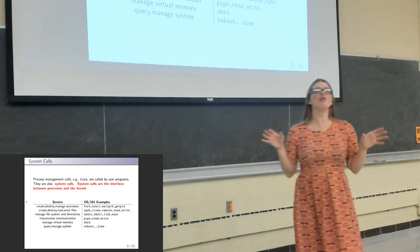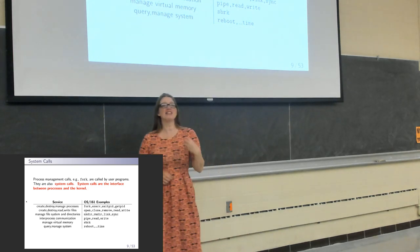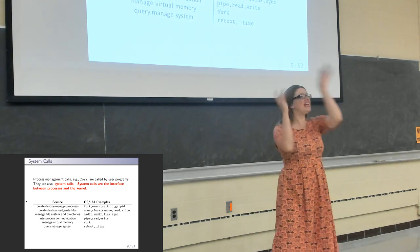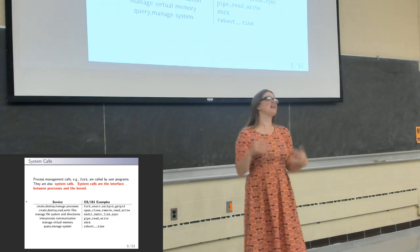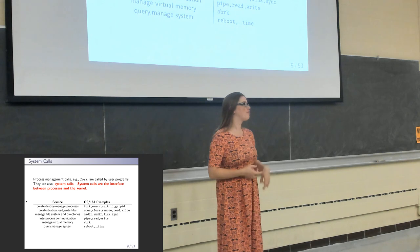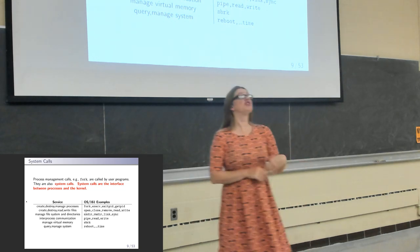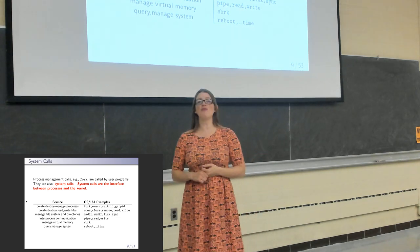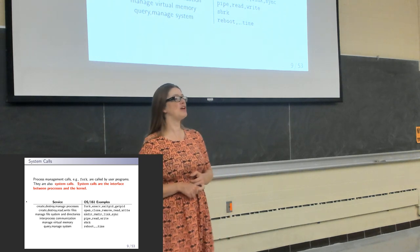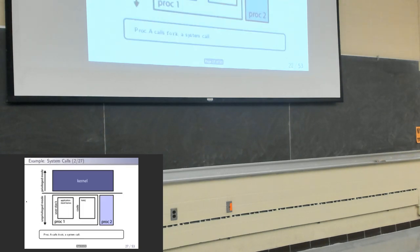We have what's known as a system call library, which provides user programs with nicely named functions, and by some magic is able to get the kernel to do something without actually calling any kernel functions. How we actually get the kernel to do this is by raising an exception. We raise an exception which causes our CPU to flip into privileged mode. All of our threads have two stacks, so when we flip from unprivileged to privileged mode, we switch from our user stack to our kernel stack for that thread.